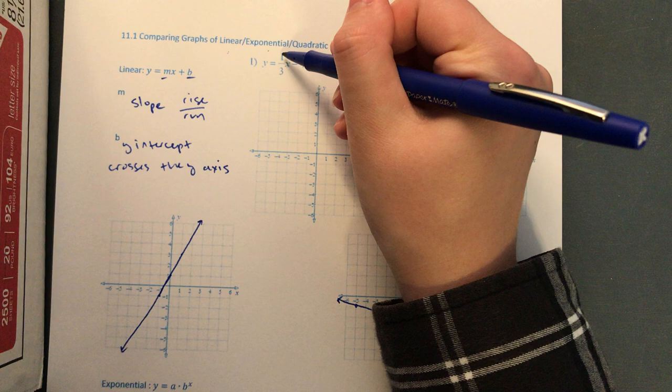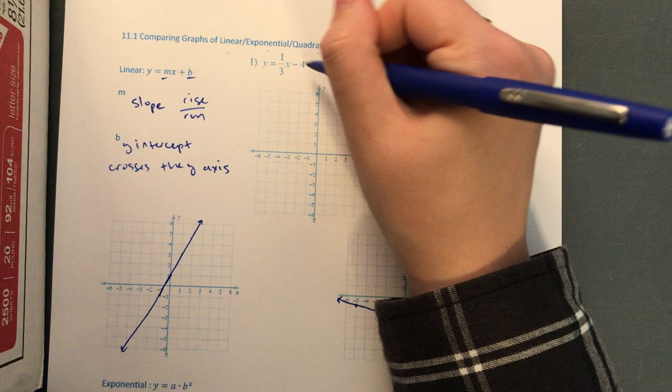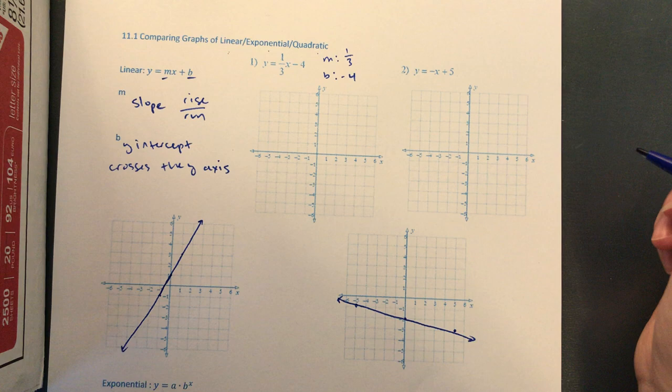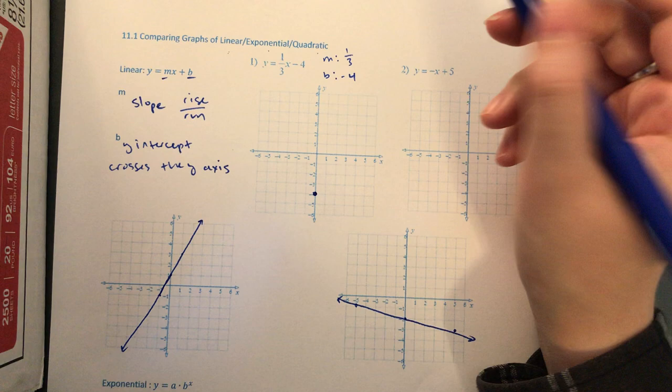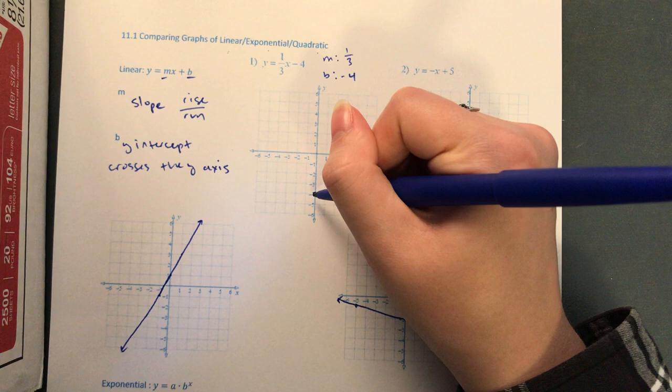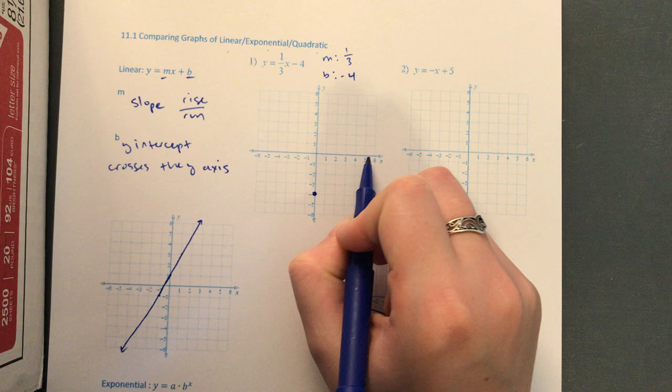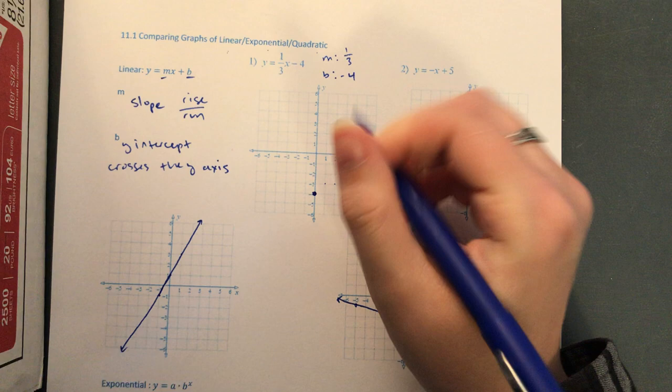First up, we're just going to graph a couple. You have to figure out what your m value and b value are. So your slope is one-third and your b value is negative four. The first thing we plot is the y-intercept. We always use the y-intercept point and then use the slope to make a second point. The y-intercept is at negative four. Plot a point there, and our slope is one-third — rise over run, so we go up one over three, running in the positive direction to the right. And there's our line.